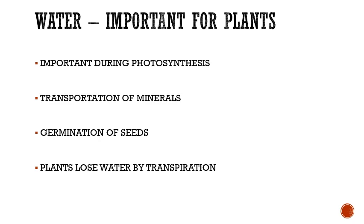About 30% of plant body weight is water. Water is important for plants in the following ways. A large amount of water is needed by plants during photosynthesis. Water helps in transportation of minerals among different parts of the plant body. Water is very important for the germination of seeds. Plants also lose water continuously through their leaves by transpiration.